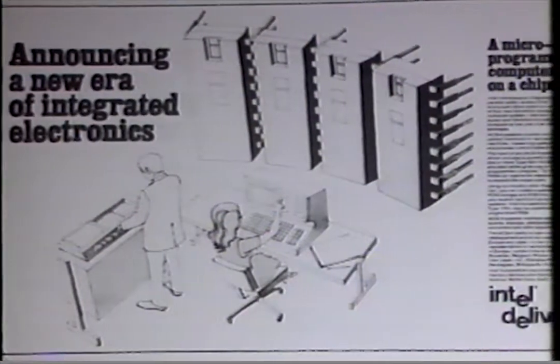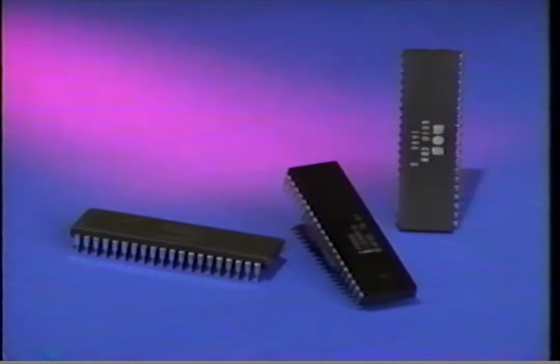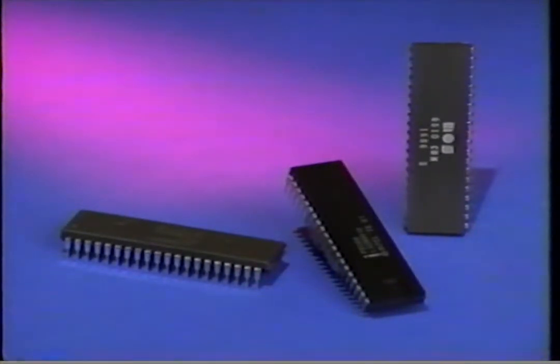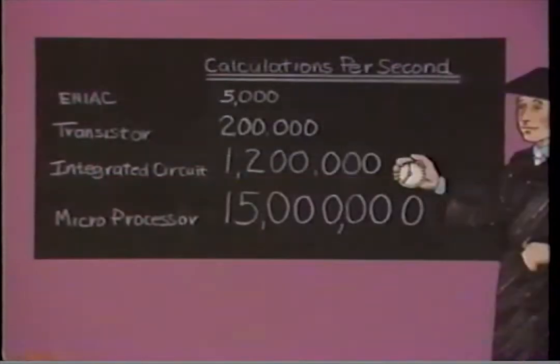Despite many advances, mainframe computers were still so big and expensive that only the government, large corporations, and universities could afford them. But this began to change in the 1970s when the Intel Corporation introduced a new kind of integrated circuit called the microprocessor — tiny pieces that could hold thousands of circuits. Microprocessors advanced to speeds exceeding 15 million calculations per second. In just four decades, computer speed increased from 5,000 calculations per second with the ENIAC's vacuum tubes to 15 million with the microprocessor.